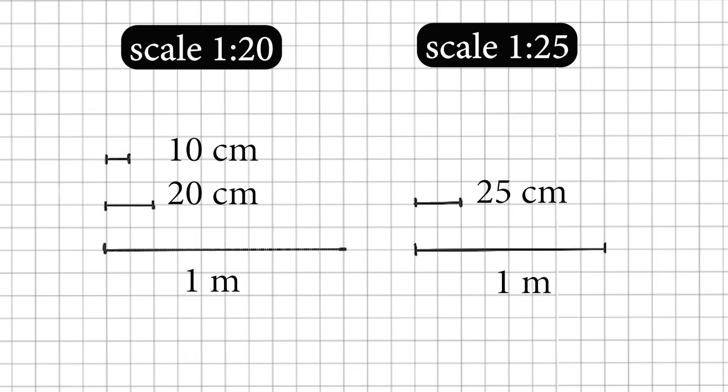What scale should you work in? For interior design work, a good scale can be 1 to 20 or 1 to 25. A scale of 1 to 20 means that 20cm in real life are represented by 1cm on my paper, or 2 of my little squares — so 1 square represents 10cm in real life. In a scale of 1 to 20, 1m in real life will be represented by 5cm on my paper, or 10 little squares. On a scale of 1 to 25, 1m will be represented by 4cm, or 8 little squares. I like to keep things simple and will work with a scale of 1 to 20.